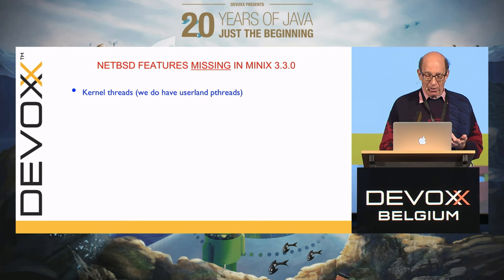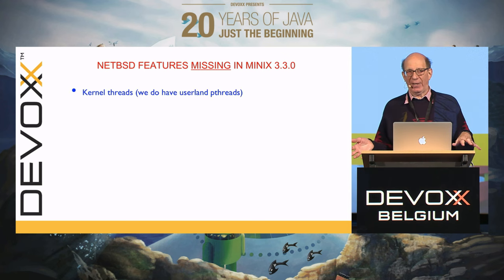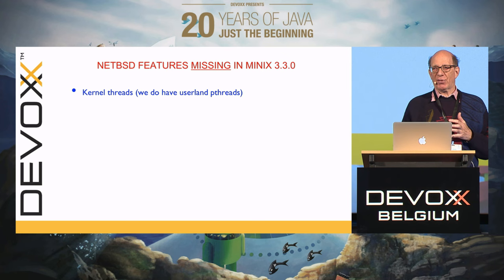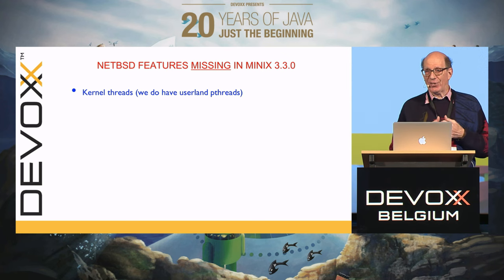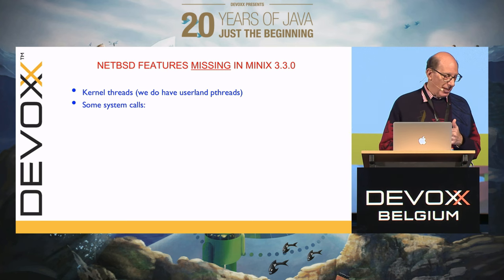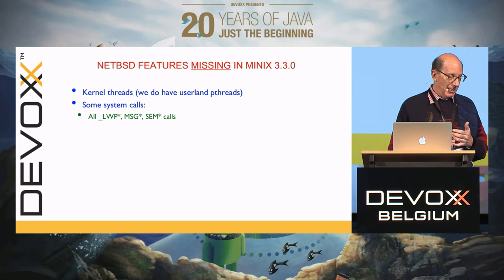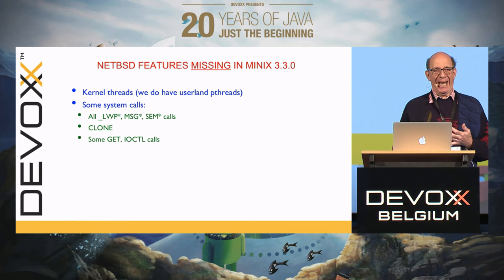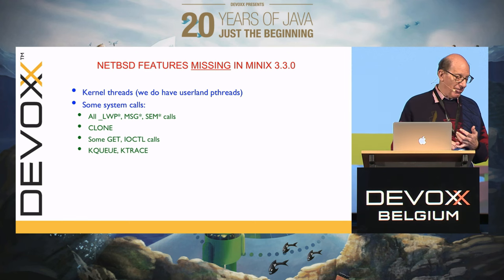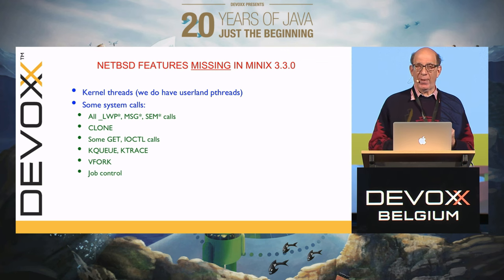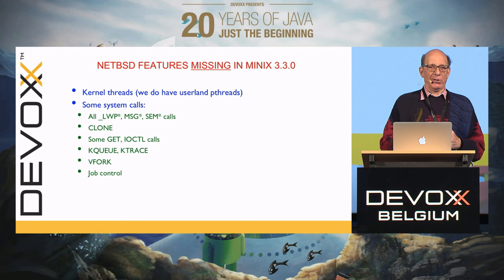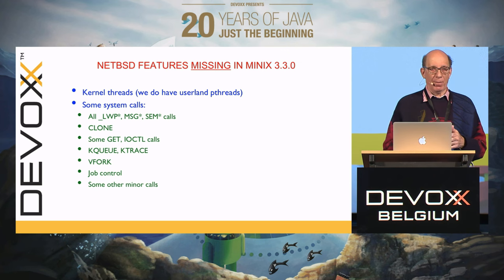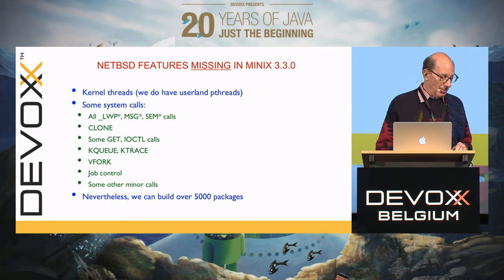There are some NetBSD things we're missing. We don't have kernel threads — it wasn't there in the beginning and it's very difficult to add afterwards. We do have user-level threads. We're also missing some more obscure system calls like LWP, message queue, and SEM, though SEM could probably be added easily. We don't have clone — we have fork, naturally. We're missing some ioctl calls and don't have KQueue and Ktrace. VFork is only a performance thing. We don't have job control — if you've got X and multiple windows, you don't need job control.